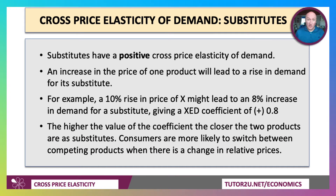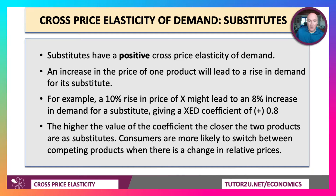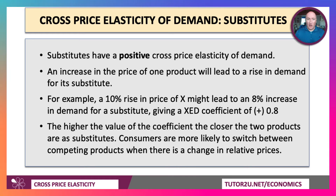With substitutes, they tend to have a positive cross-price elasticity. An increase in the price of one product will bring about an increase in the demand for a substitute. So the price of X might go up by 10%, leading to an 8% rise in the demand for a substitute product, giving a positive cross-price elasticity of 0.8. The higher the value of the coefficient, the closer are the two goods as substitutes, meaning consumers are more likely to switch between competing products when there's a change in relative prices.